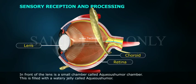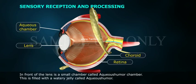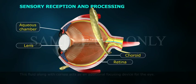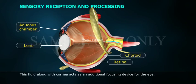In front of the lens is a small chamber called the aqueous chamber. This is filled with a watery fluid called aqueous humor. This fluid, along with the cornea, acts as an additional focusing device for the eye.